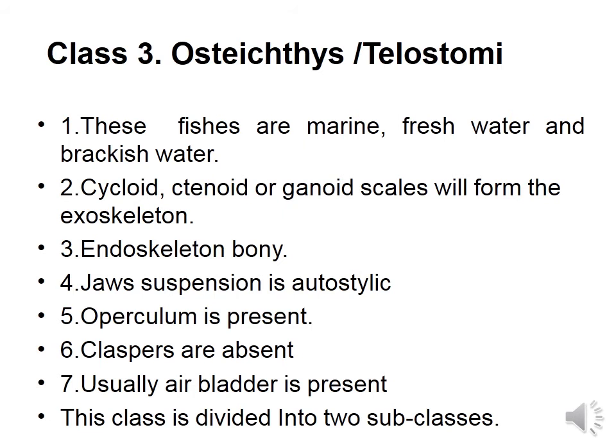Many species possess a hydrostatic organ called the swim bladder. The tail is homocercal — the caudal fin is of equal lobes, hence known as homocercal tail, in contrast to Chondrichthyes which have a heterocercal tail with unequal lobes. A spiral valve is absent in the intestine except in a few forms. Cloaca is absent; separate anal and urinogenital openings are present in Osteichthyes or bony fishes. Examples include Rohu, Catla, Anabas, Ophiocephalus, and Tilapia.